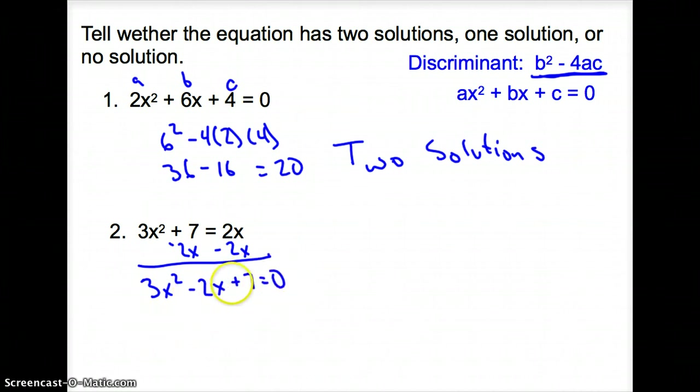We have an a, a b, and a c. Plugging it in to the discriminant, we have b², which is (-2)² minus 4 times 3 times 7.